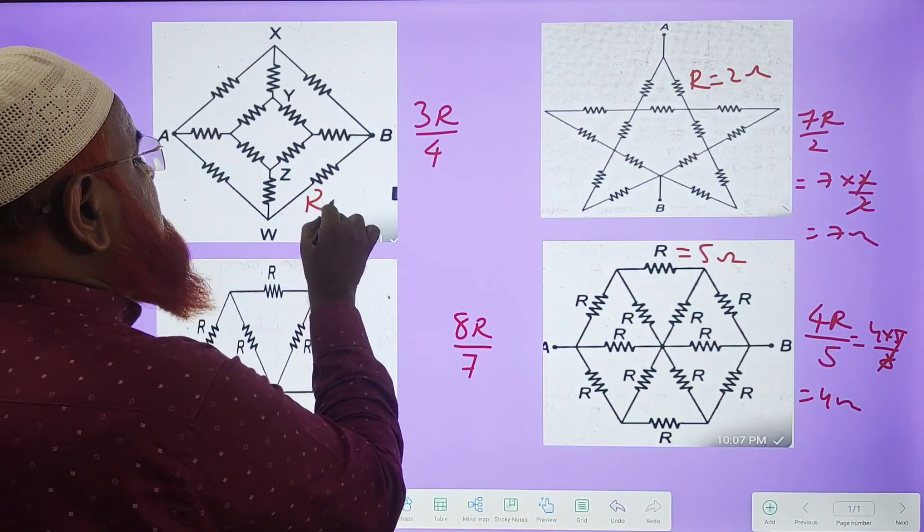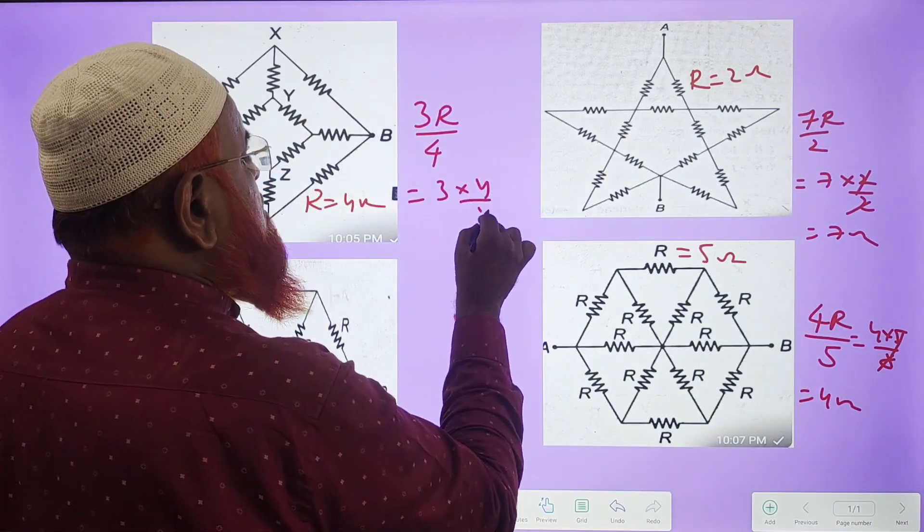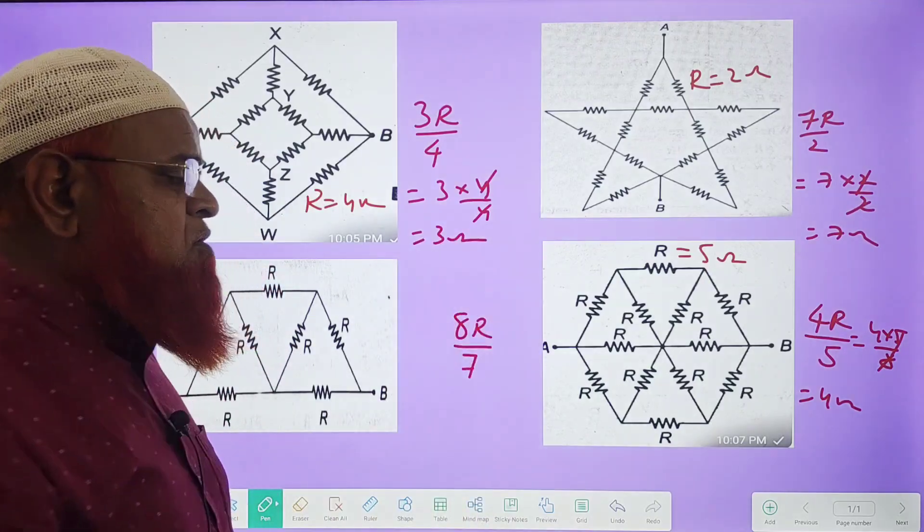For example, if each and every resistance is 4 ohms in this rhombus, then you will just do 3 into 4 by 4. The 4s get cancelled. Your answer is 3 ohms.